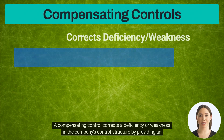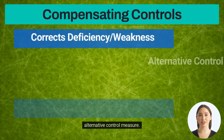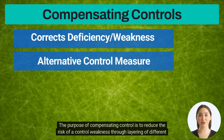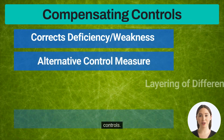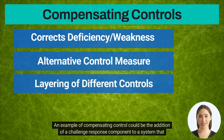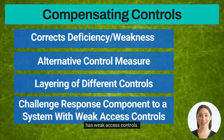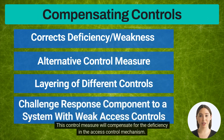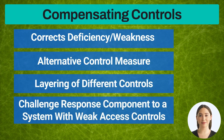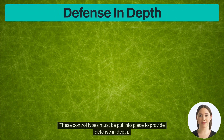A compensating control corrects a deficiency or weakness in the company's control structure by providing an alternative control measure. The purpose of a compensating control is to reduce the risk of a control weakness through layering of different controls. An example could be the addition of a challenge-response component to a system that has weak access controls, which compensates for the deficiency in the access control mechanism.